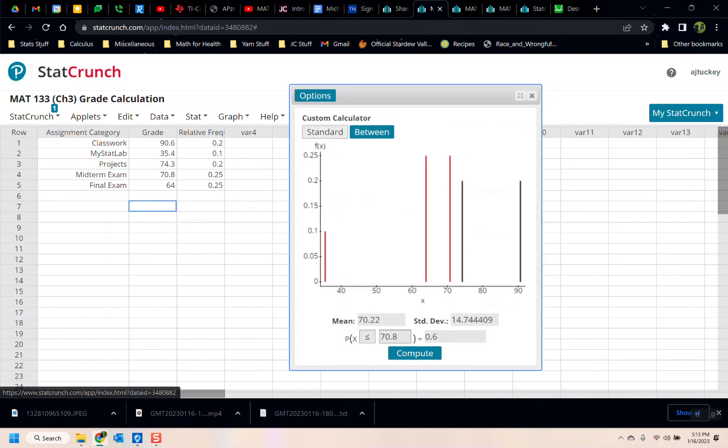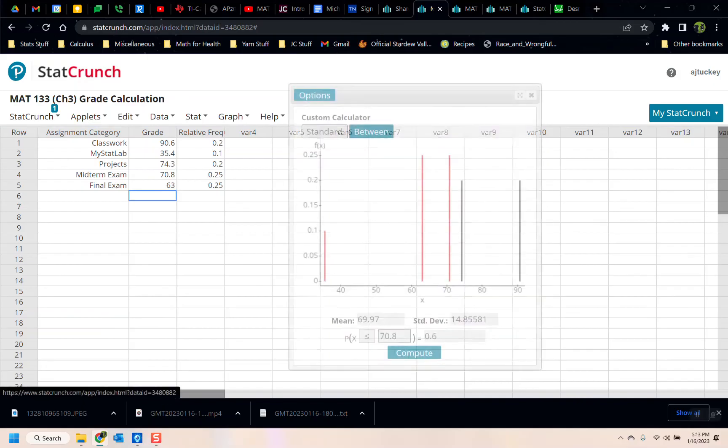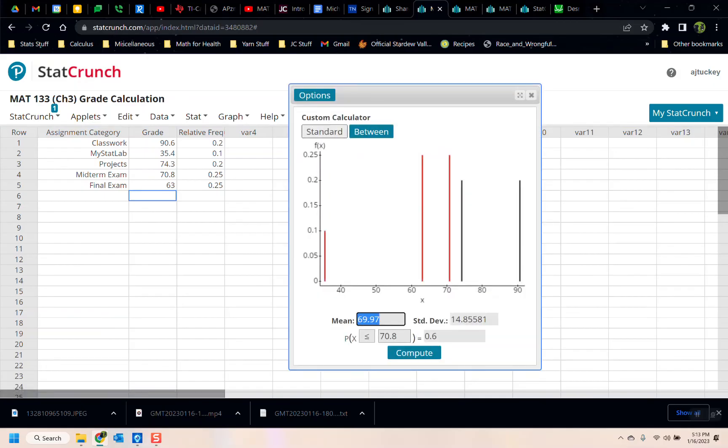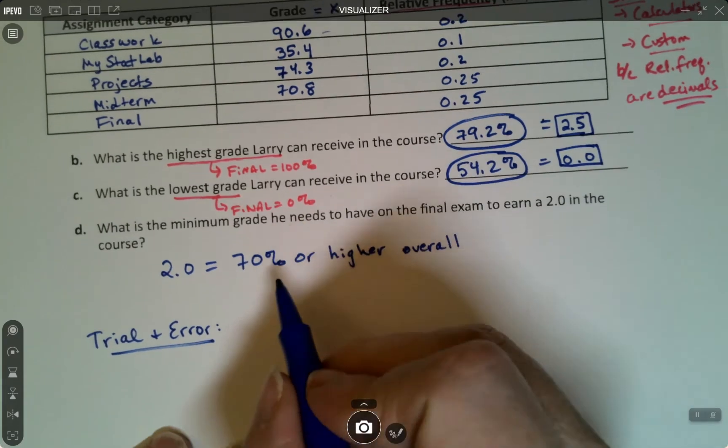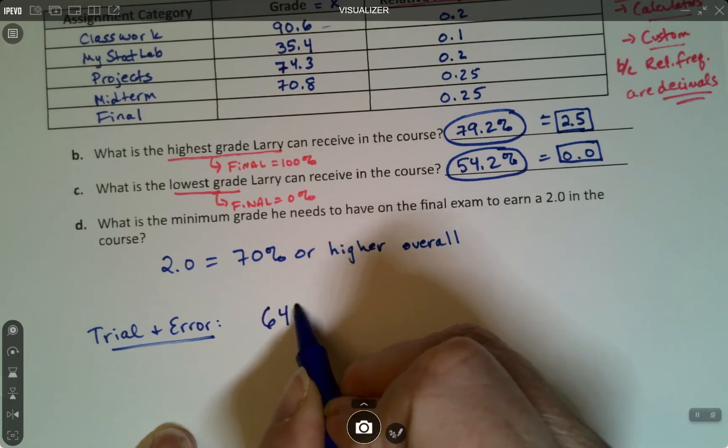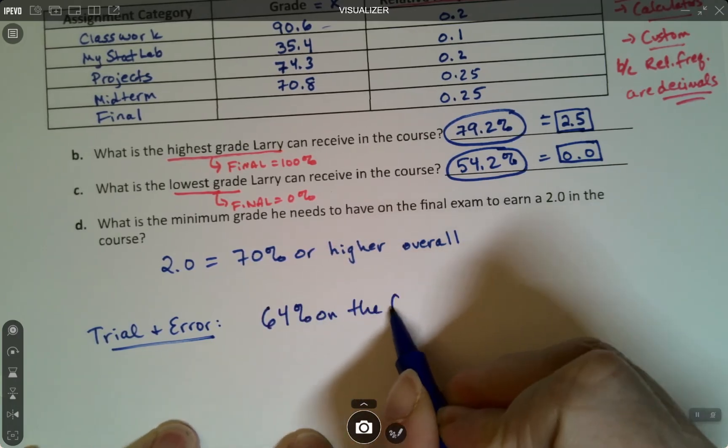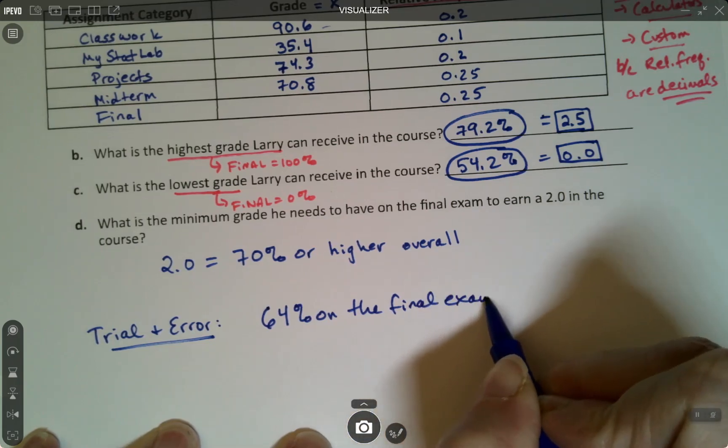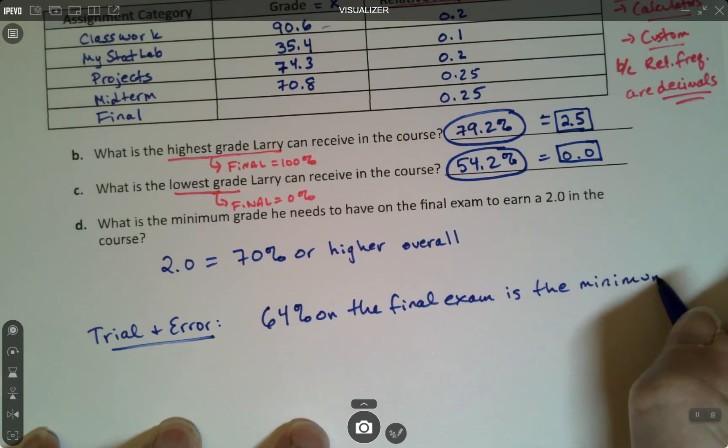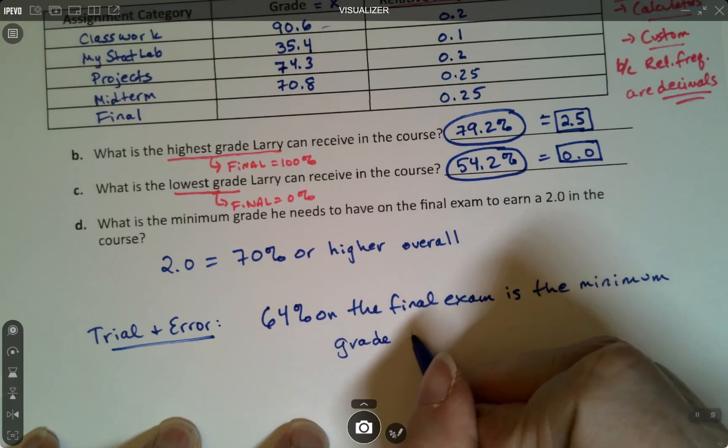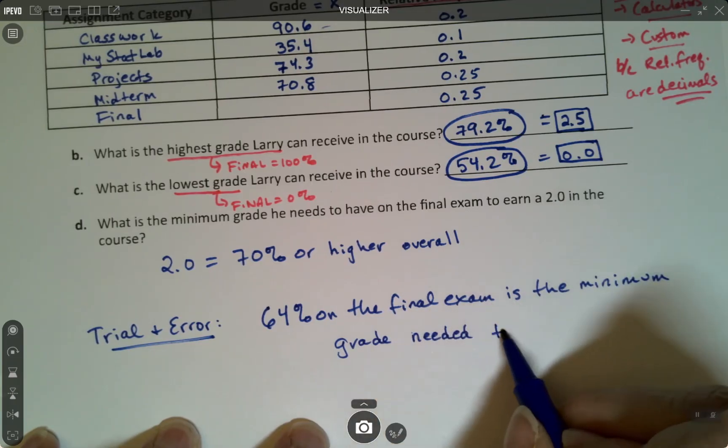64 is 70.22. Let's try 63. Nope. There it is. Okay, so we need a 64. So 64 is the lowest number that Larry could score on that exam and still get a 2.0 in the course. So trial and error. We tried it, and then 64% on the final. 64 is the minimum grade needed to receive a 2.0.